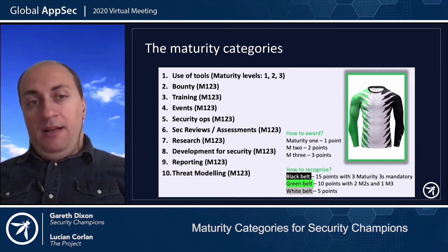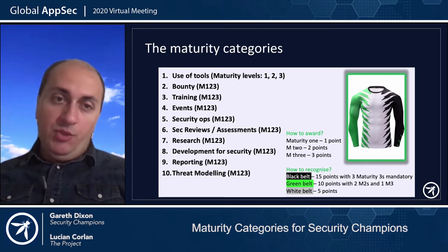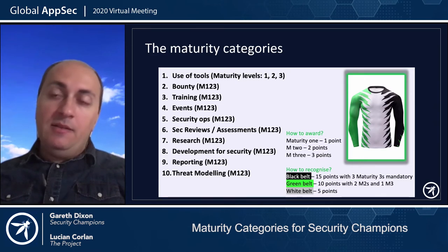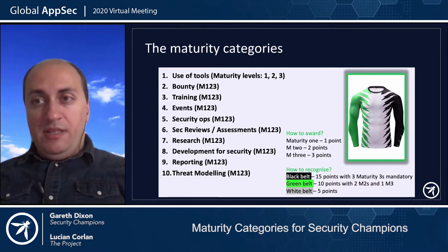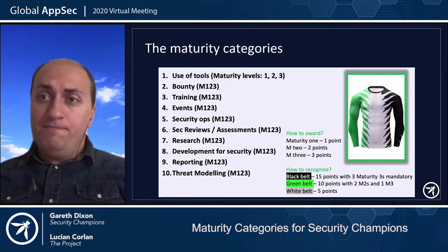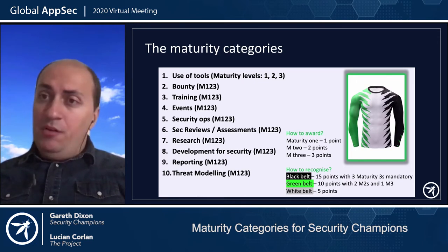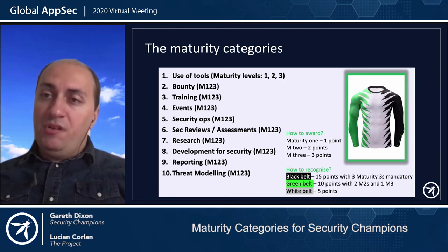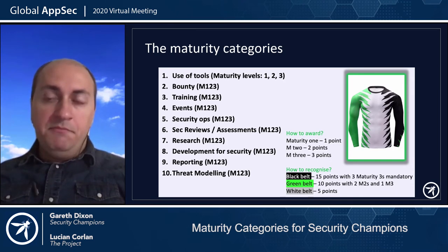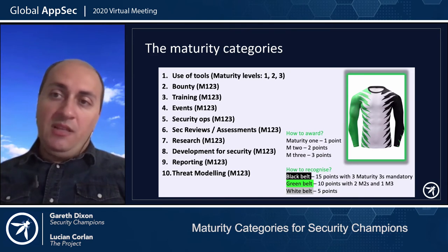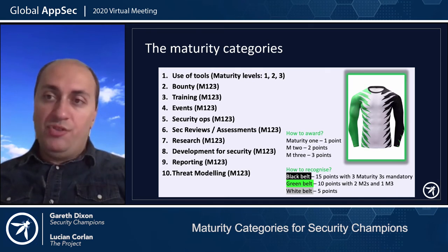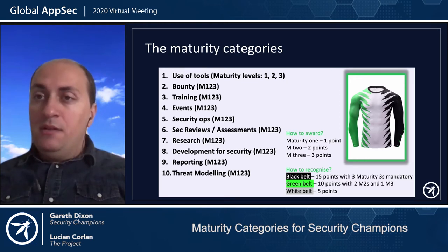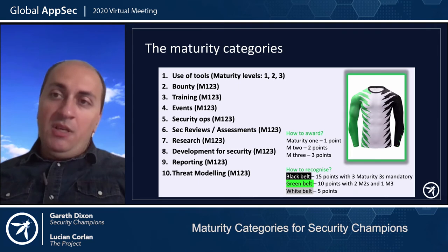The first category is the use of tools. Most security champions, when they start — maybe even before they become champions — start playing around with security tools. Most of them may start with OWASP ZAP, then potentially look at static code analysis tools. Dependency checking is much more available now through various solutions — through GitHub, through Snyk, through OWASP Dependency-Check. The first category is pretty straightforward and applies not only to developer security champions, but also to those from DevOps, Ops, and even desktop support.